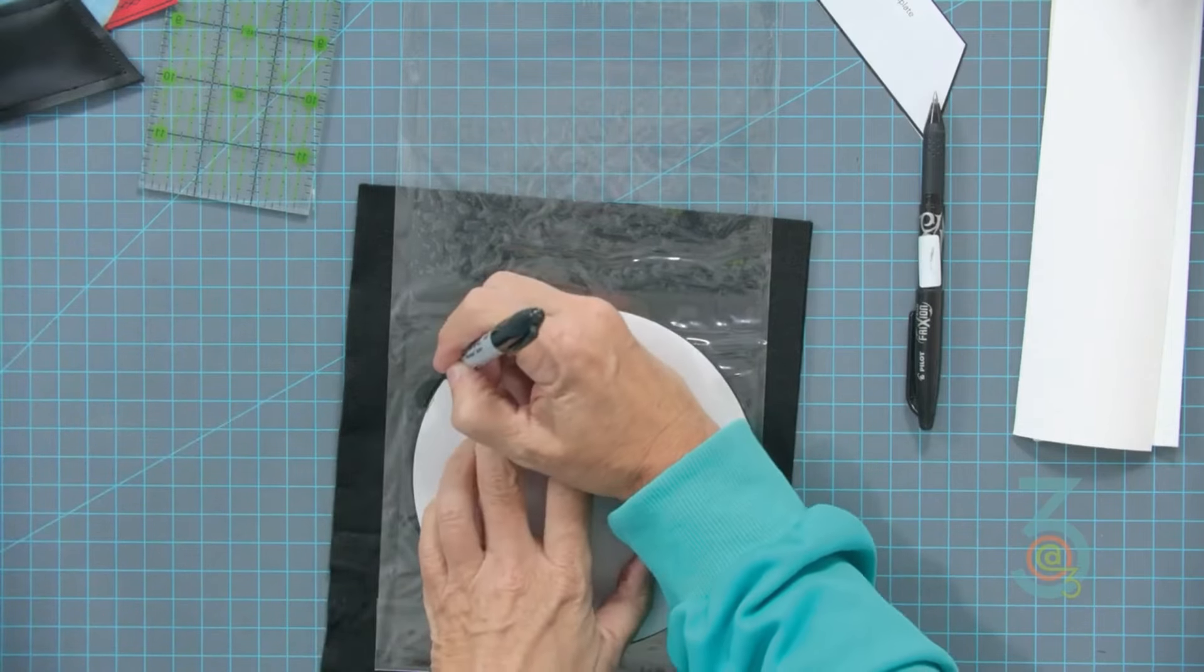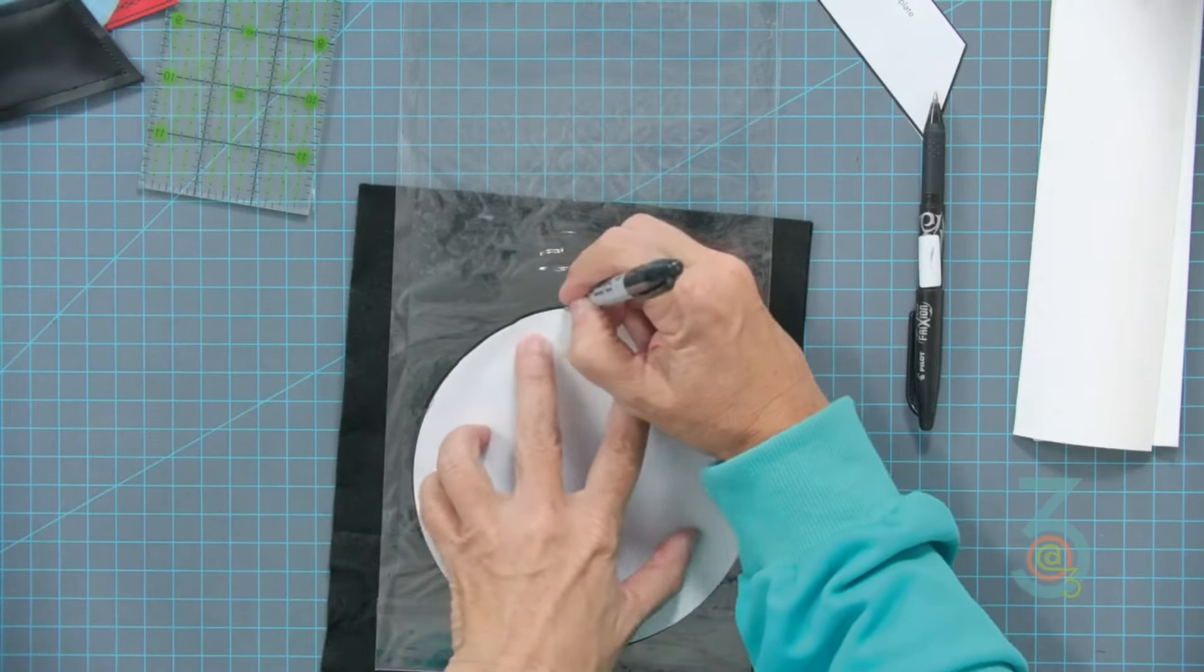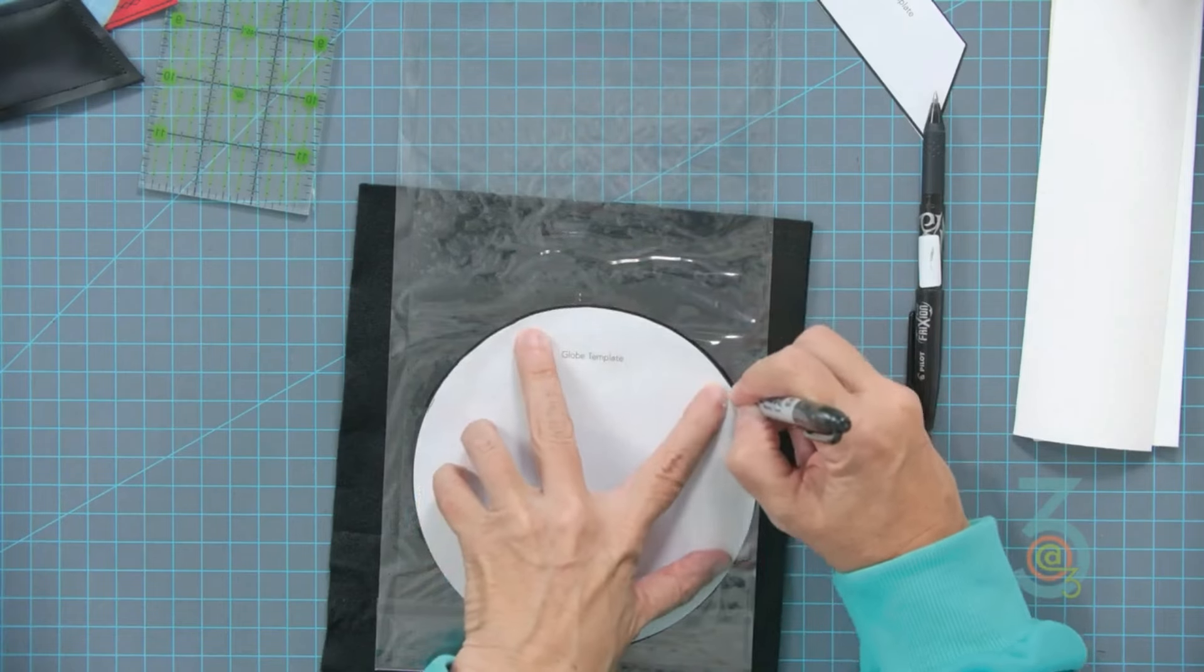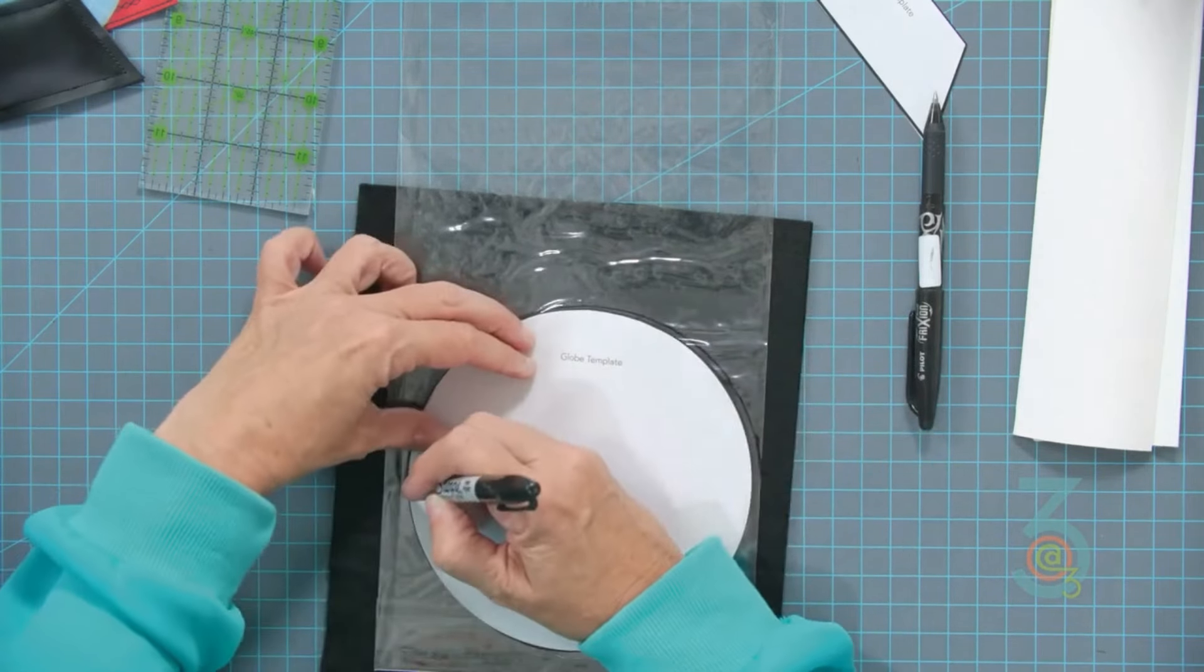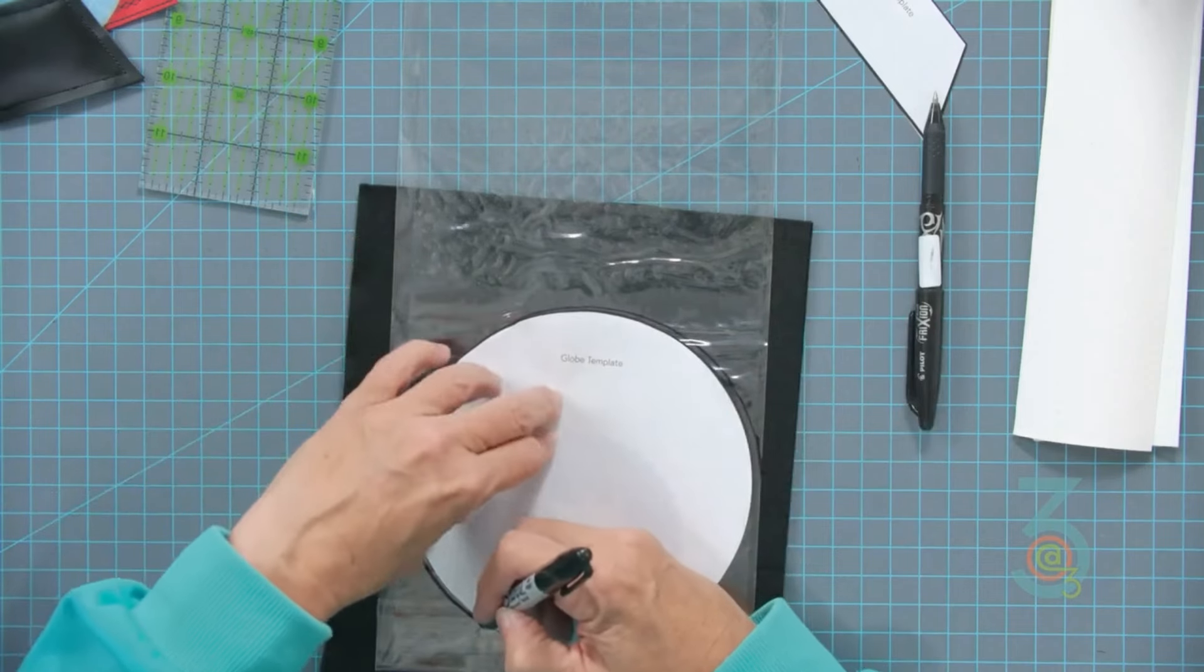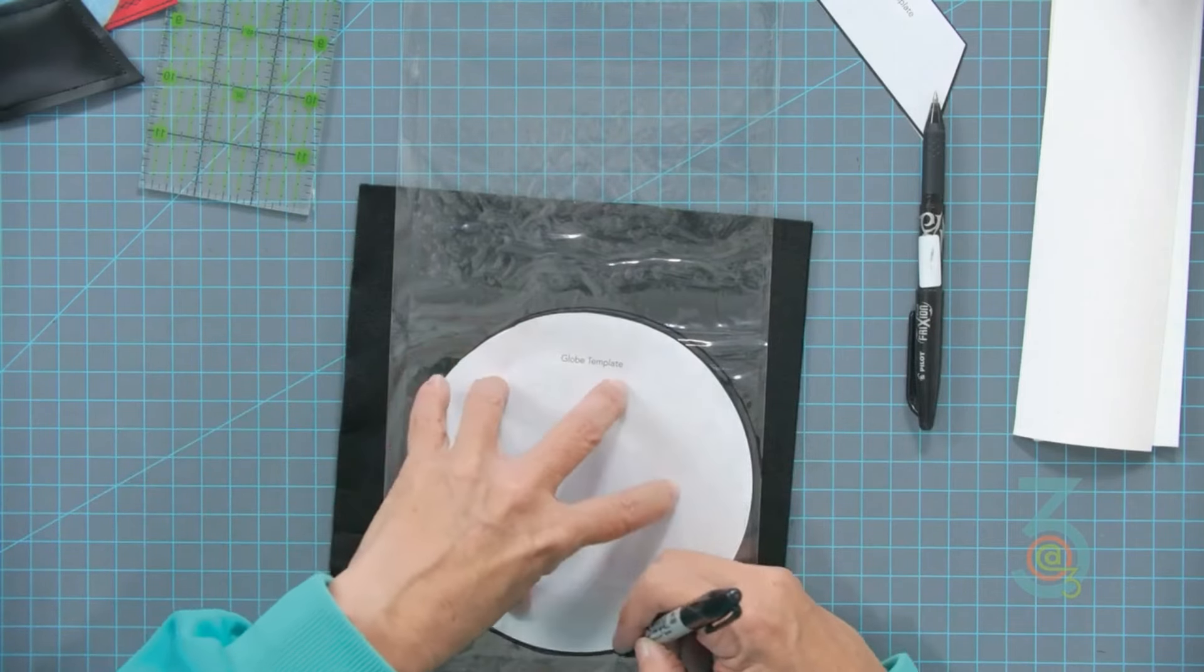That's how we're actually going to do it because then you can get a really nice quarter inch or smaller line when you cut that out.